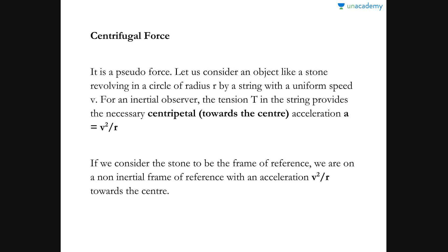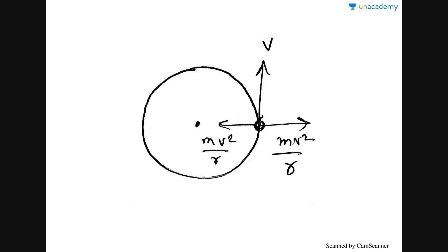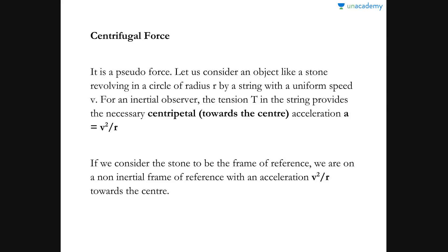To understand it better, let us consider an object — for example, a stone — revolving around in a circle because it is tied to a string. Let the circle have a radius r, and let us consider the stone revolving in a circle of radius r by a string with uniform speed v. The stone is circling around with uniform speed v, which is the tangential velocity in the circle.